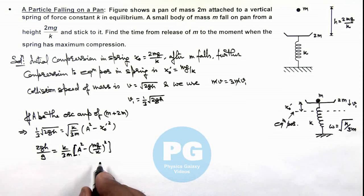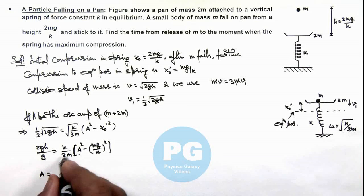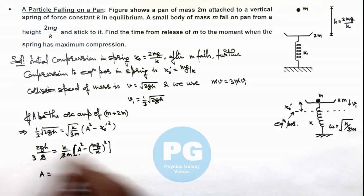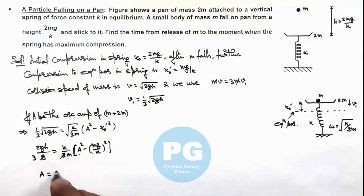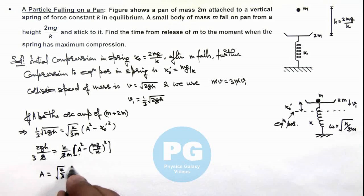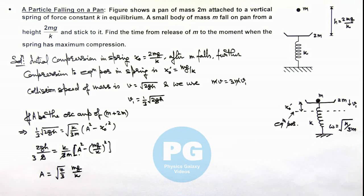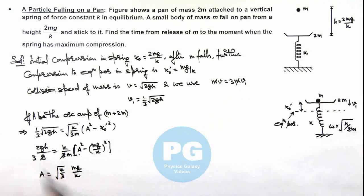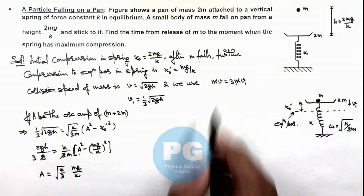Solving this equation, the 3 cancels out and on simplifying we get the amplitude A = √(7/3)·(mg/k). Substituting the given value h = 2mg/k confirms this result. So this is the amplitude with which the combined mass would be oscillating.